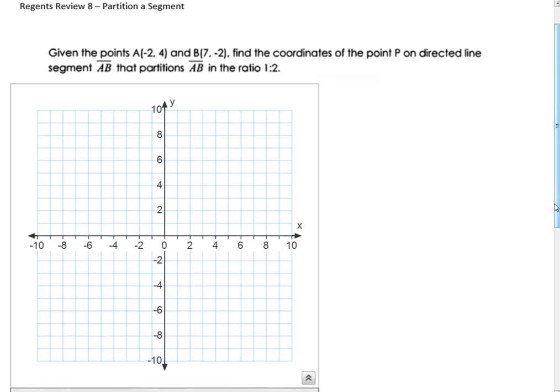And when we have a partition segment, there's a direction to it. So this is negative 2, 4 is the first point here, A, and B is 7, negative 2. So what's happening is it's going in the direction from A toward B. So that matters in terms of we're going to call this x1, y1, x2, y2.